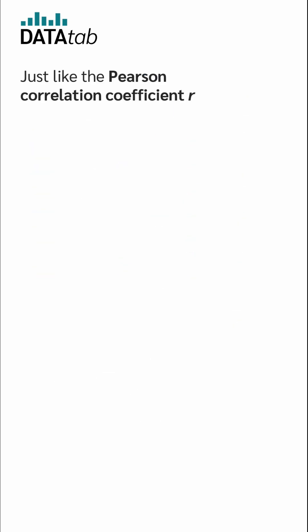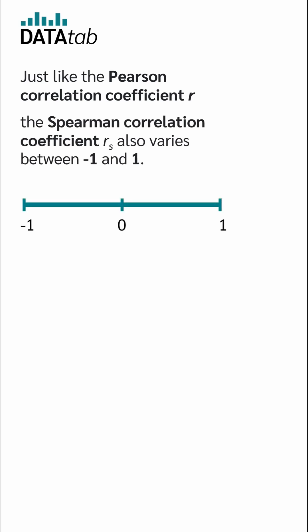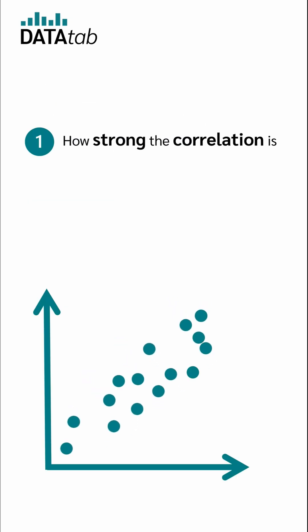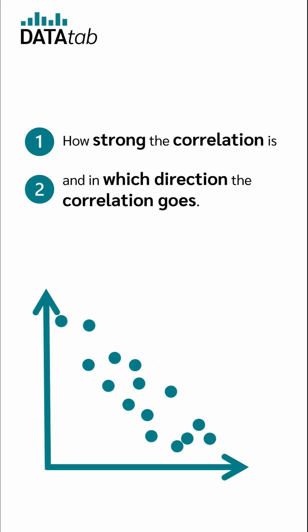Just like the Pearson correlation coefficient r, the Spearman correlation coefficient r s also varies between minus 1 and 1. With the help of the coefficient, we can now determine two things: how strong the correlation is, in which direction the correlation goes.